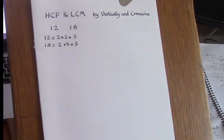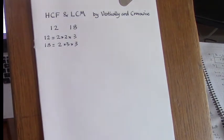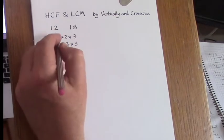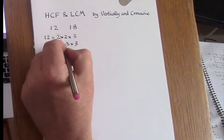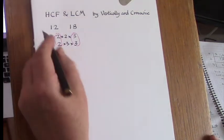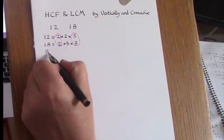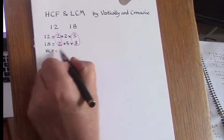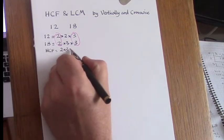Then to find the highest common factor, we look for common factors. Here are two 2's and here are two 3's, and the product of those gives the HCF. So HCF is 2 times 3 equals 6.